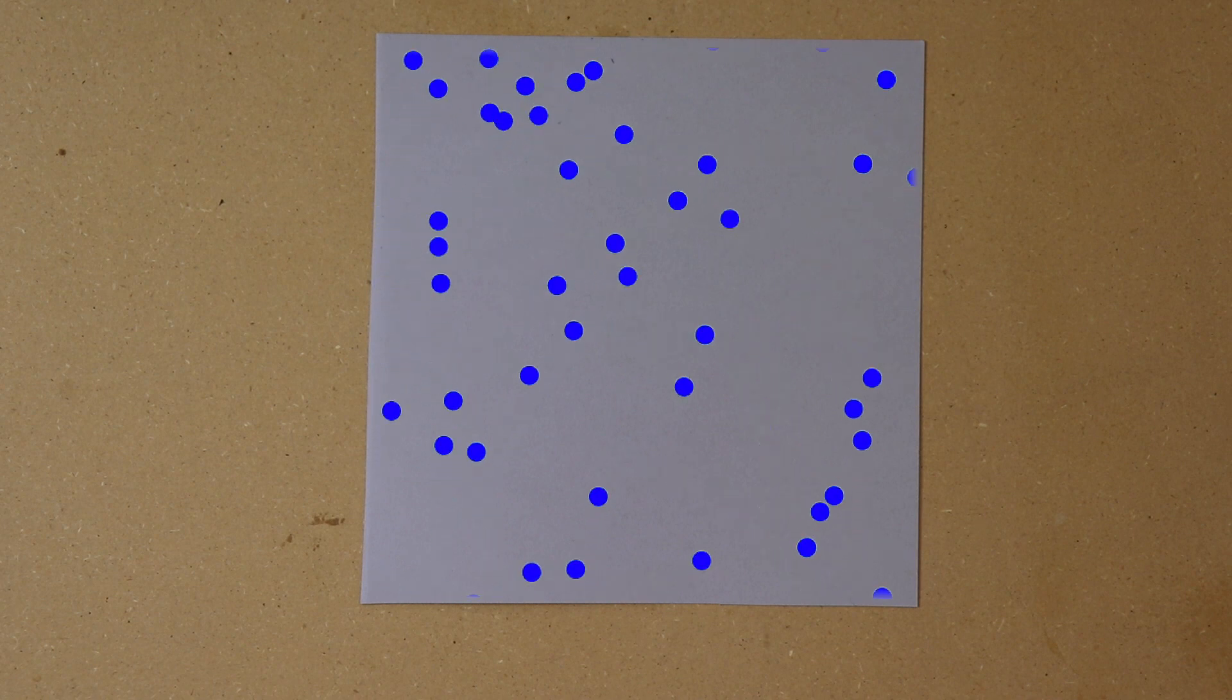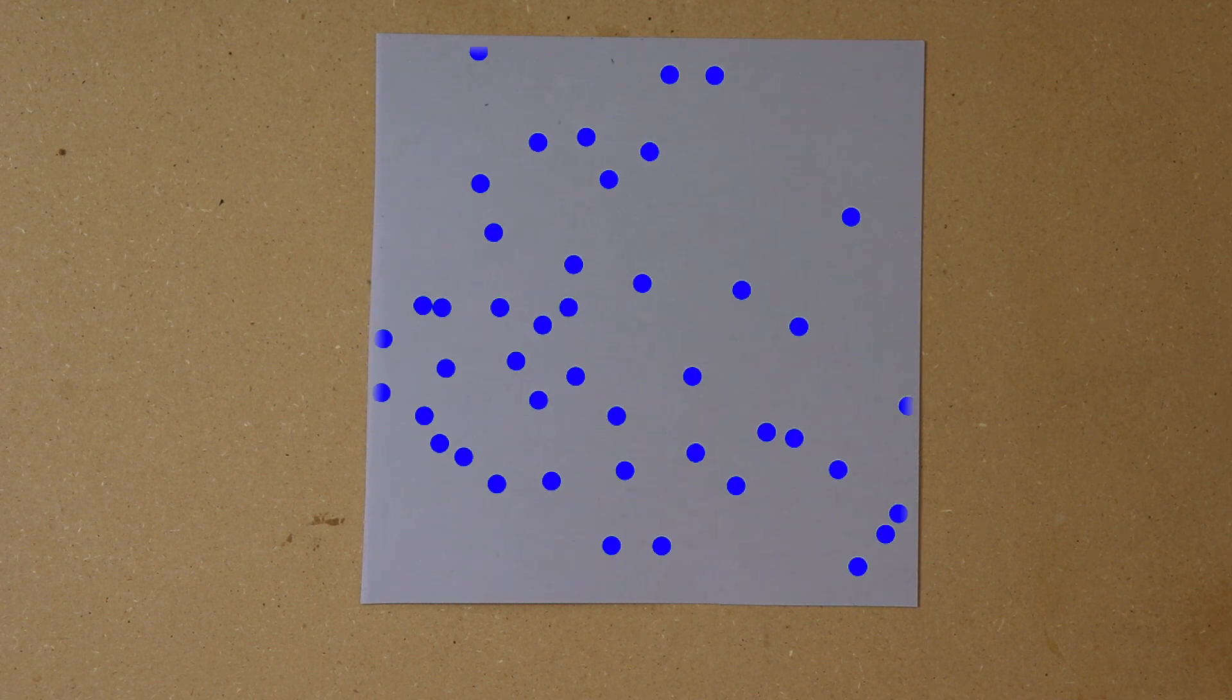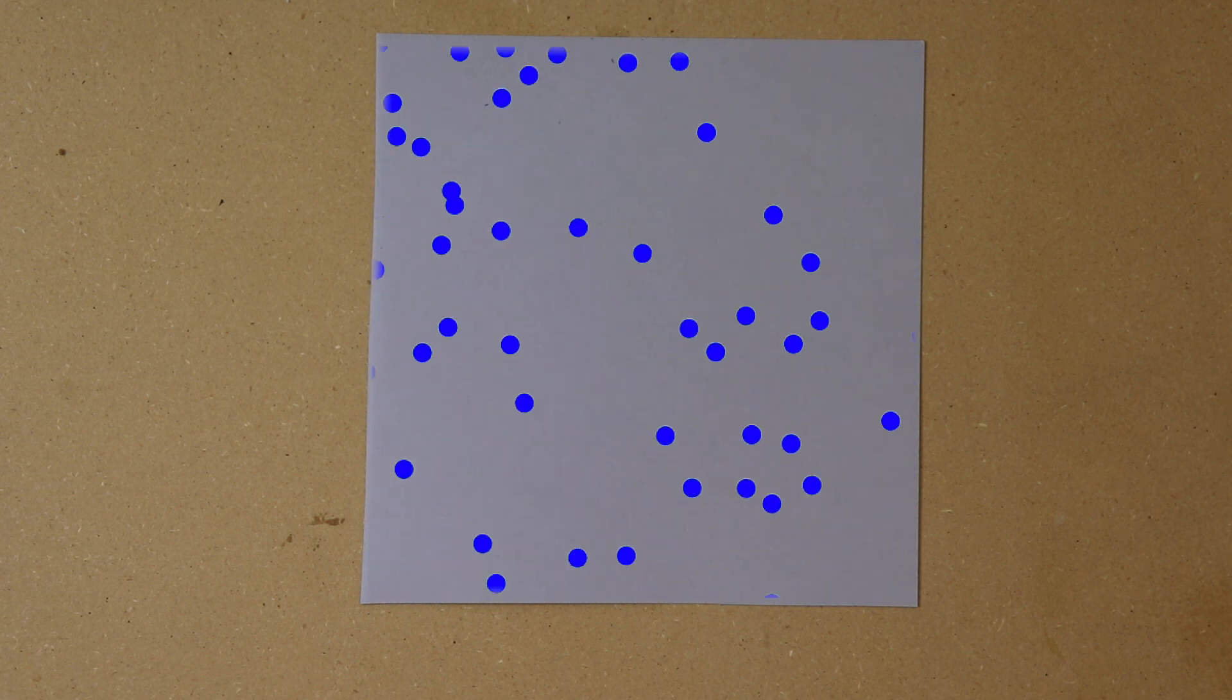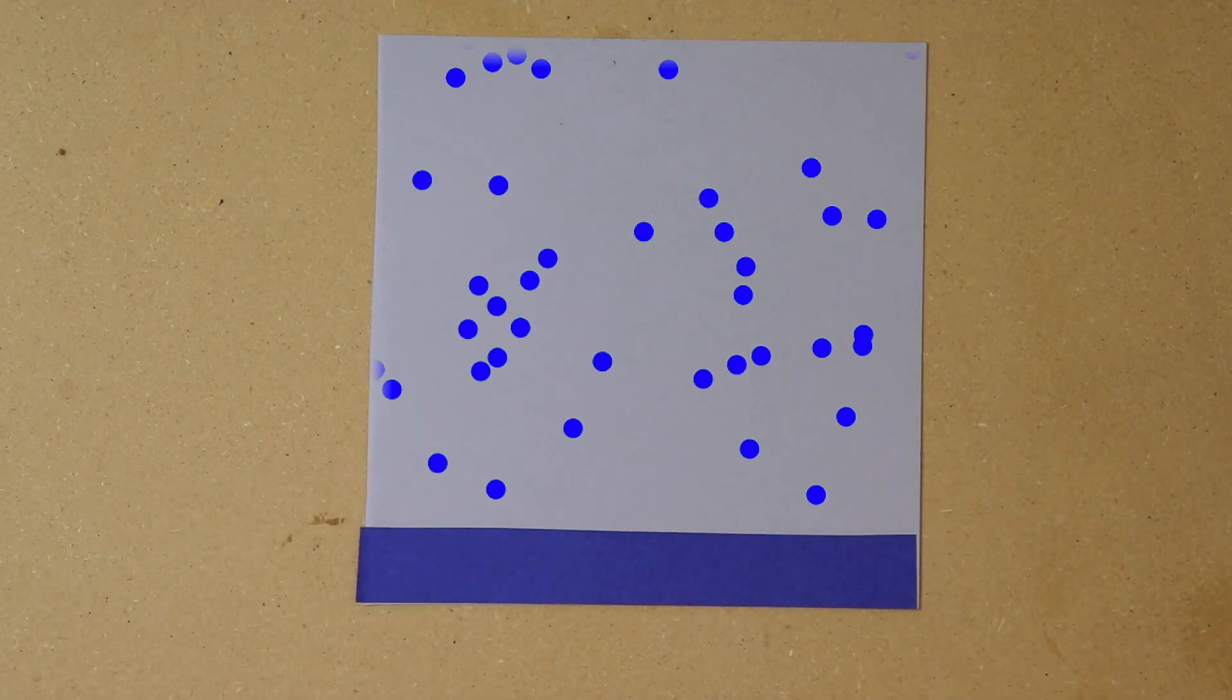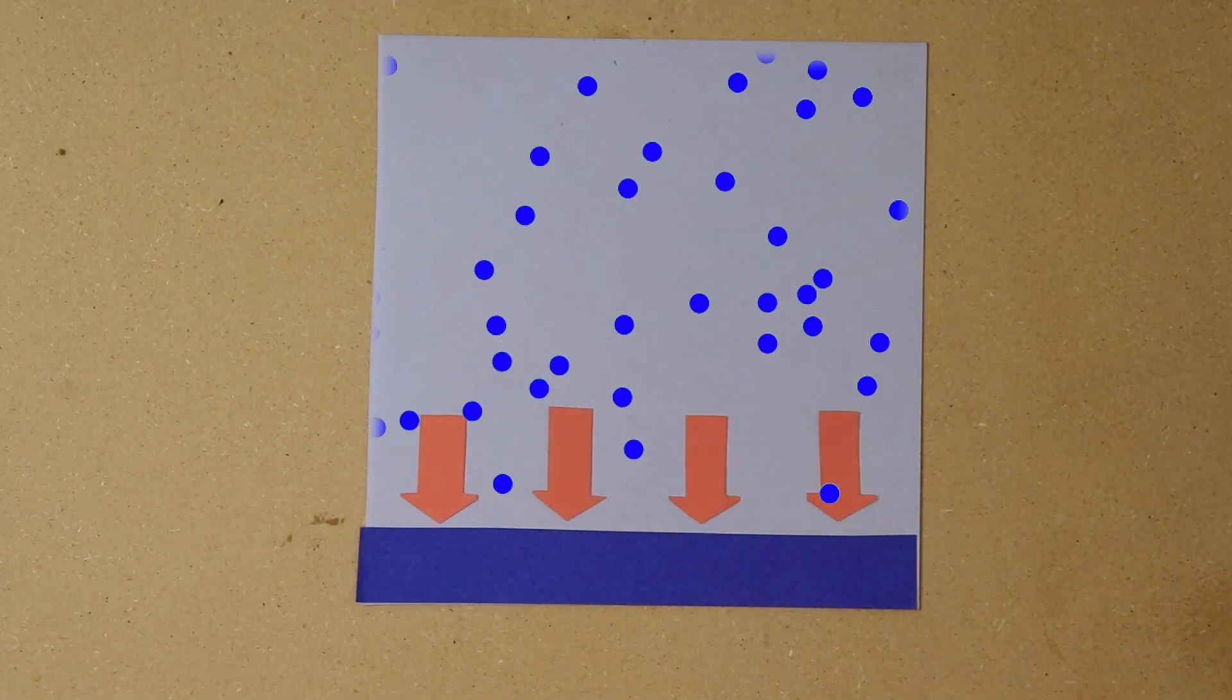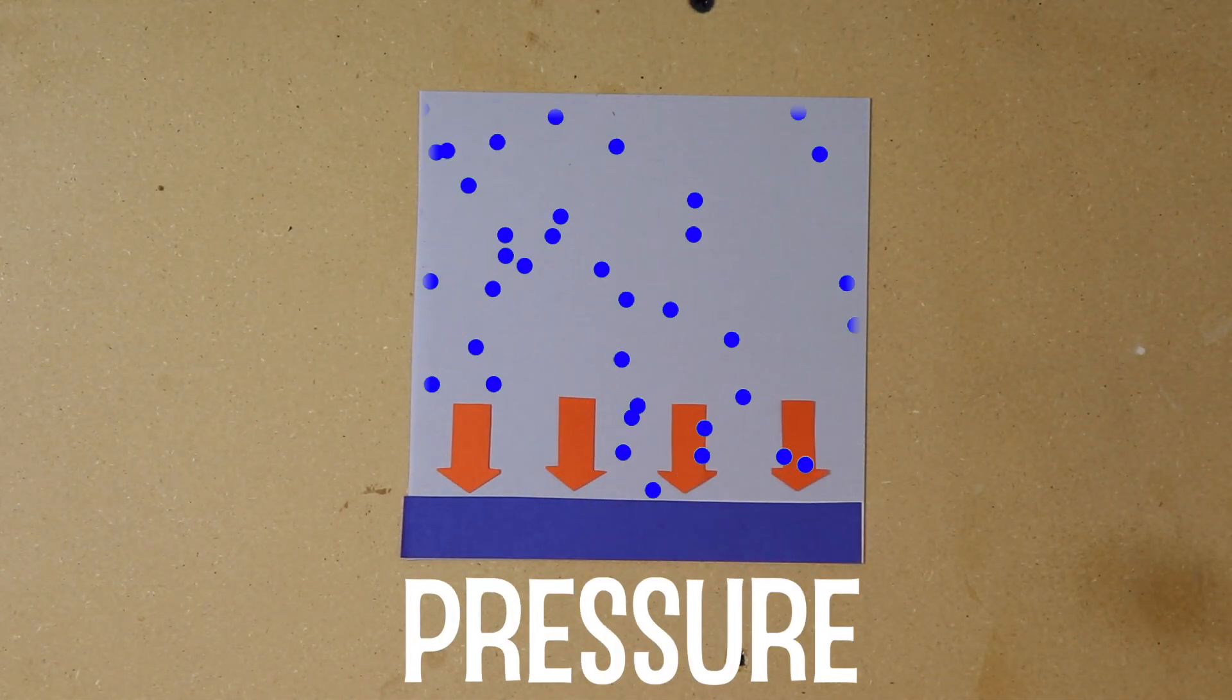The results of all these little collisions is that the molecules create a force on each other and on whatever they come into contact with. So if the air is bouncing against a surface, there's actually a force pushing against that surface. This effect is called pressure. It's a force being applied over an area.